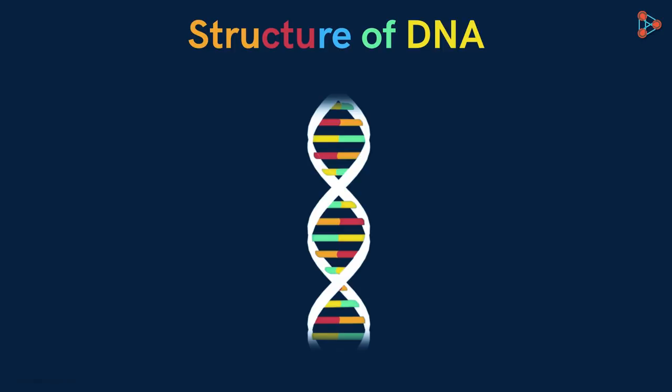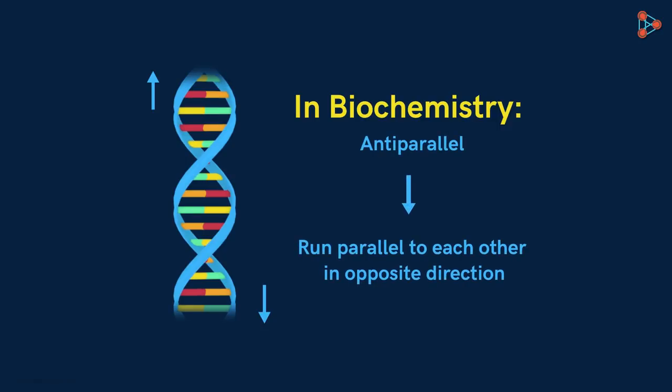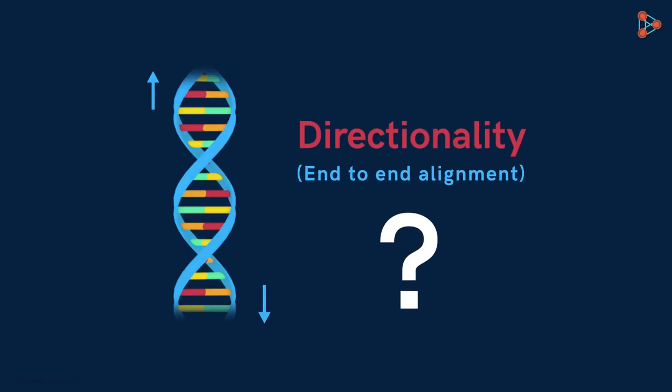The two complementary DNA strands are anti-parallel. And what does this mean? Well, in biochemistry, two units like these strands are said to be anti-parallel if they run parallel to each other, but in the opposite direction. So, is there directionality, that is end-to-end alignment, in the case of DNA? Yes, there is. Let's understand the directionality in the DNA molecule better in the next part.